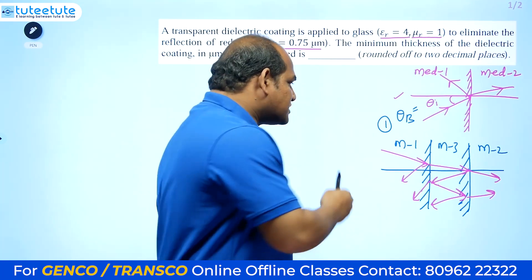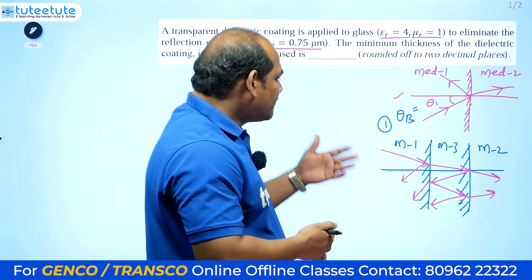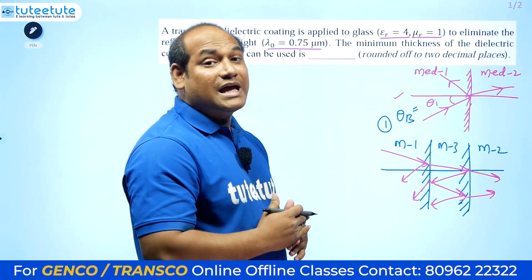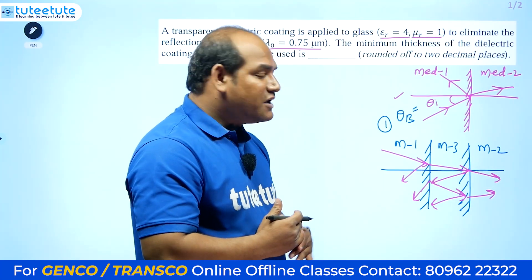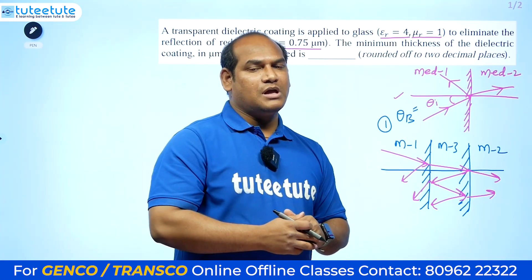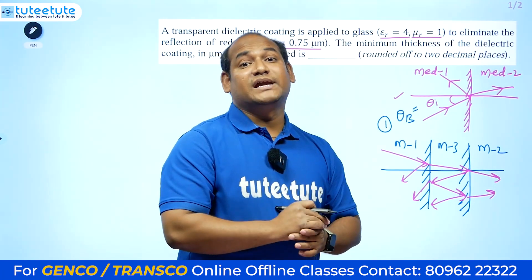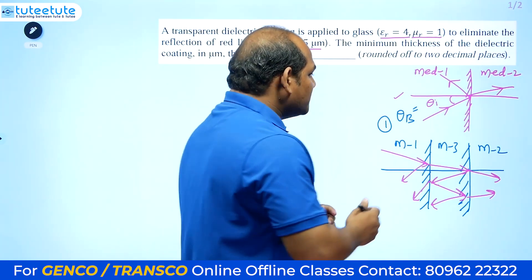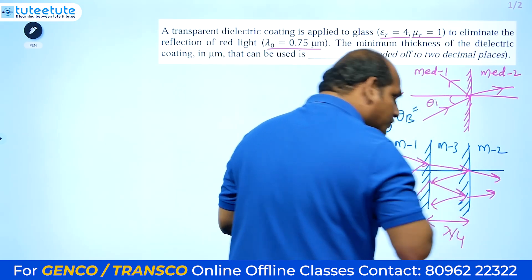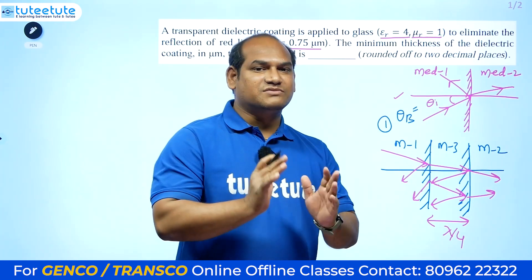If we look at the total reflected wave and divide by the incident wave power, we get the reflection coefficient. For no reflections, we set the reflection coefficient equal to zero. The conclusion is that the width of the slab must be equal to lambda by 4 — if the slab width is λ/4, you will not have reflections.